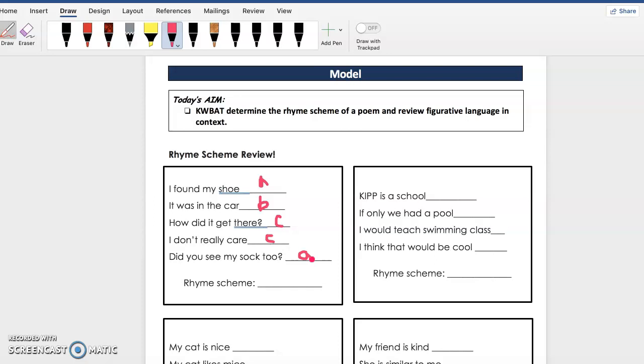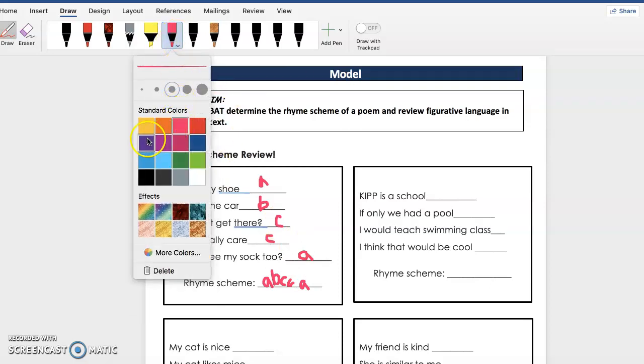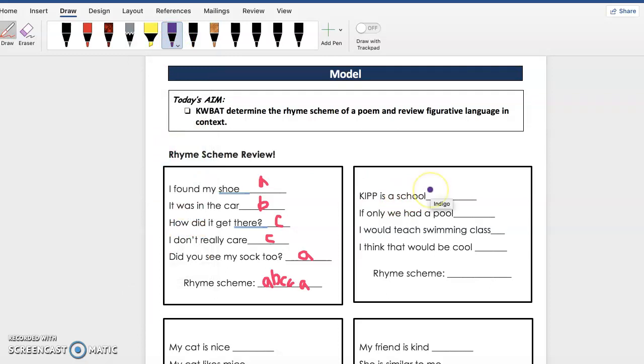Alright, and so the rhyme scheme for this poem will be A-B-C-C-A. And so if the poem was to continue on, it would be A-B-C-C-A, A-B-C-C-A, A-B-C-C. It keeps going over and over again.